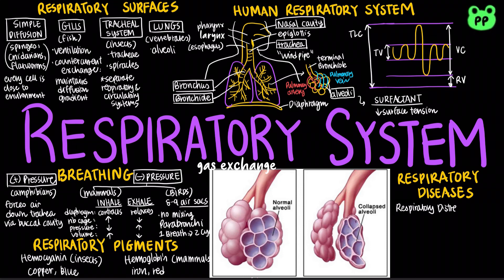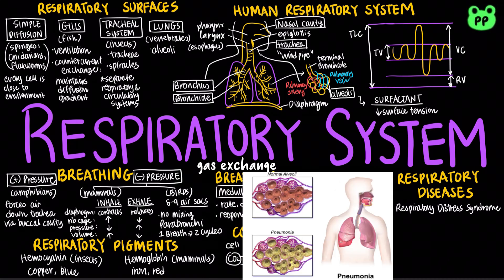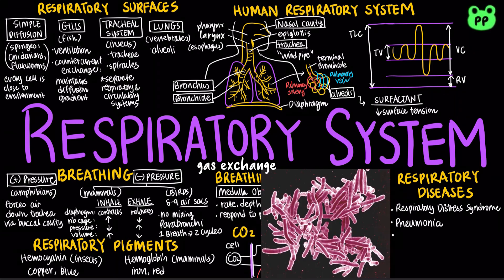Respiratory distress syndrome is common in premature infants when the lungs don't have a sufficient amount of surfactant, causing alveoli to collapse and leading to severe breathing problems. Pneumonia refers to lung inflammation, which causes thick fluid to accumulate in the alveoli, making gas exchange difficult. Pulmonary tuberculosis is caused by bacterial attack on the lungs, which greatly reduces lung elasticity, leading to severe coughing, constant fever, and chest pains.